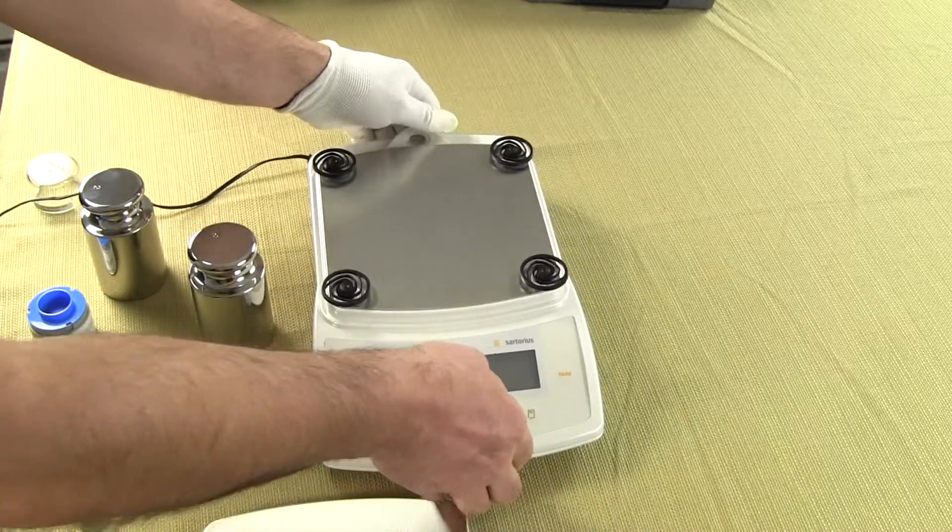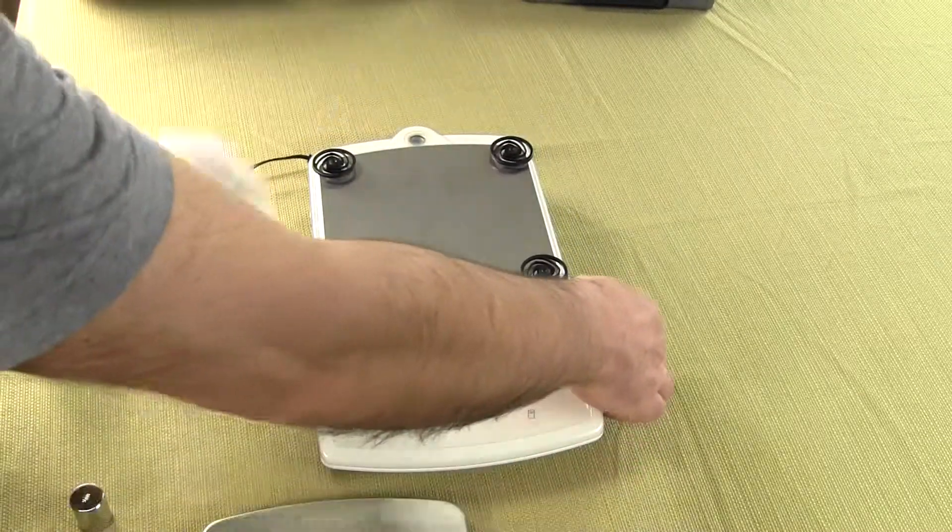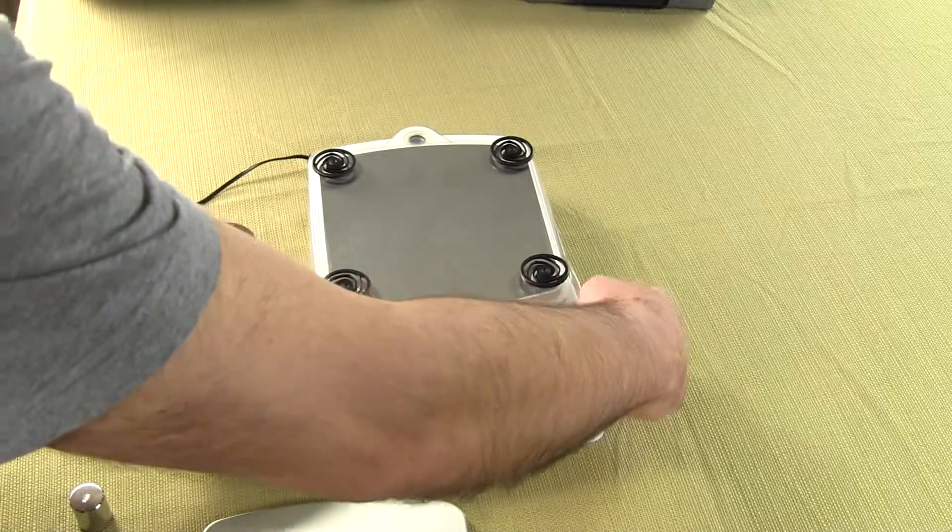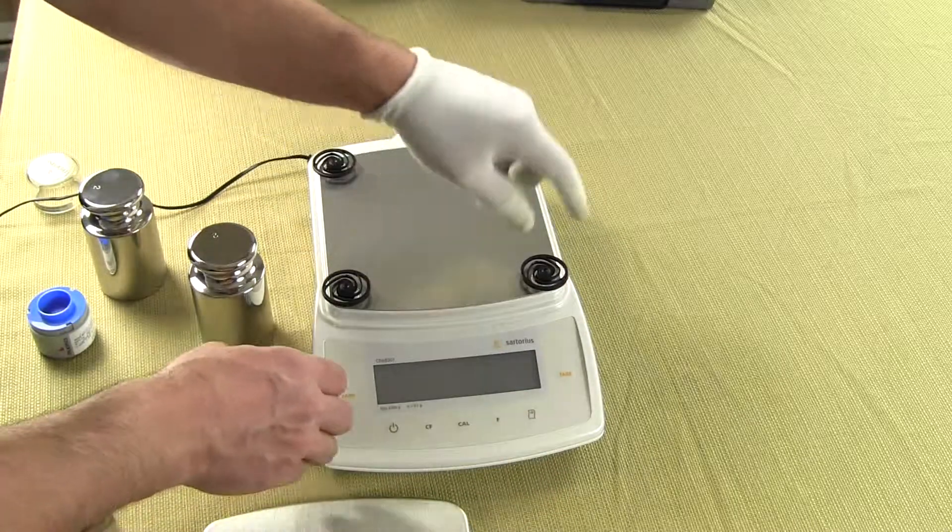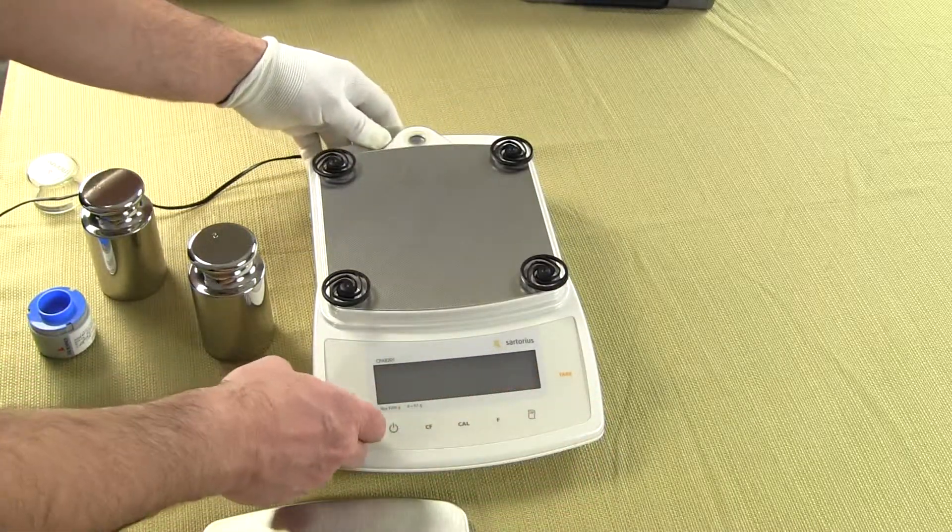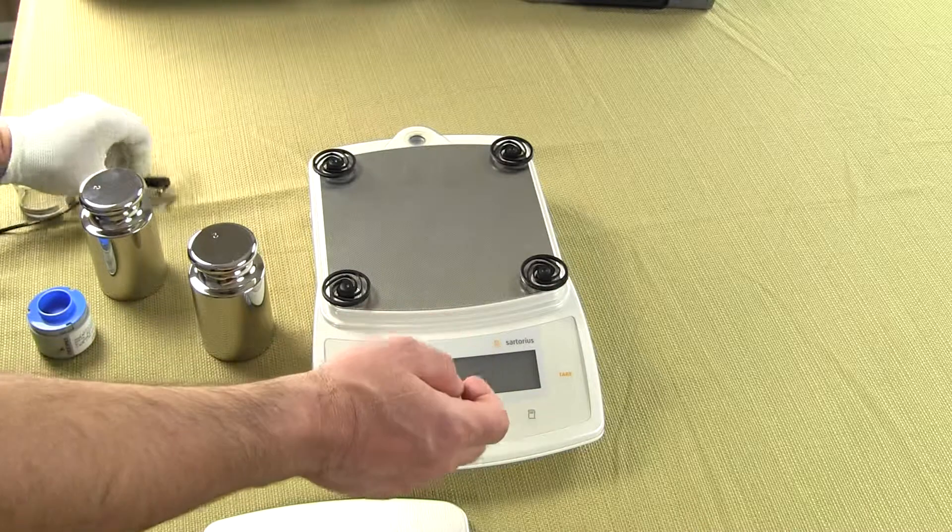The balance also comes with one splash shield. You can see this comes off and you get one of these with the balance. So this lifts right off. You have to pull off these four plastic tabs and it comes off. So that comes standard with the balance.